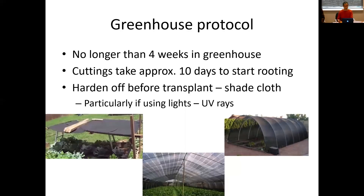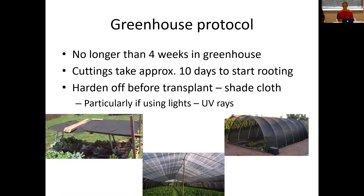In a greenhouse, smaller is better — you don't want to have those plants in a greenhouse longer than four weeks. Once you've gone over a month, those plants are really starting to mature, and when you transplant them out into the field, you're going to have a difficult time with transplant shock. Depending on when you're planting them and the day length, you want to try to have them out in the field before they're flowering.